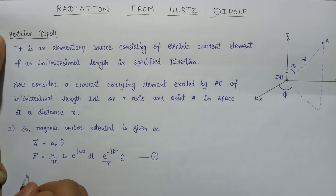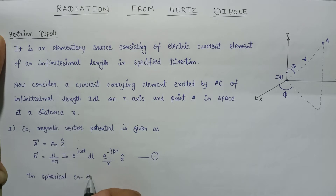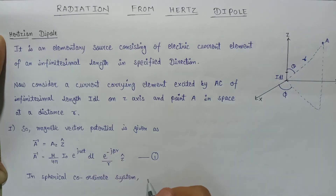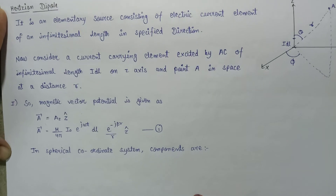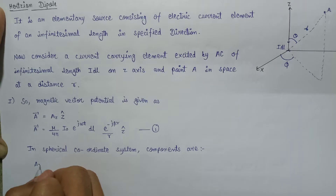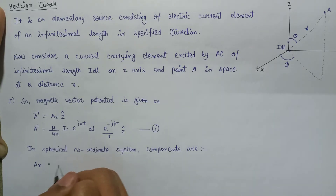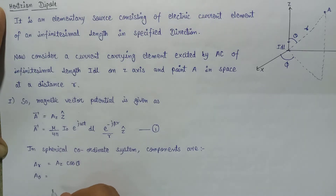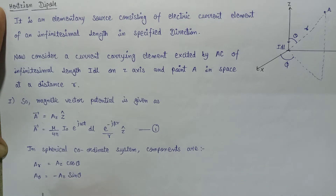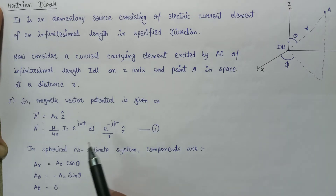In the spherical coordinate system, the components of the A vector are as follows: the first component A-subscript-r equals A-z cosine theta. The second component A-theta equals minus A-z sine theta. The third component A-phi is always equal to zero. These are the three components of the magnetic vector potential.